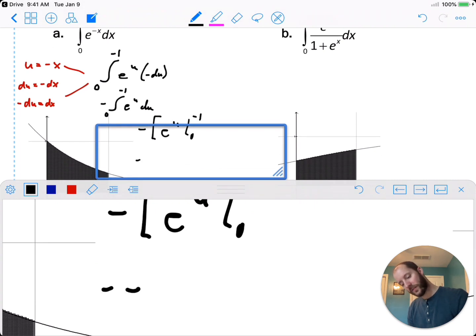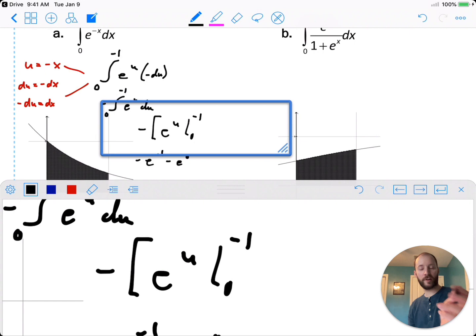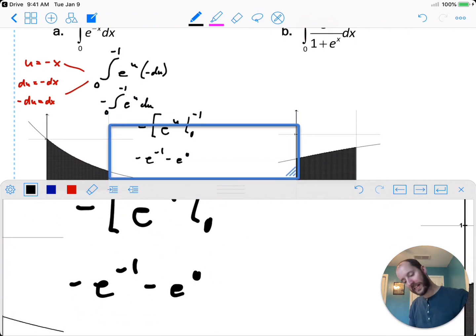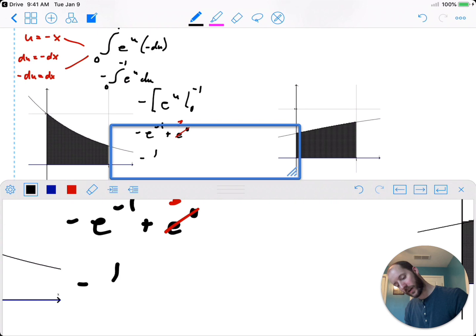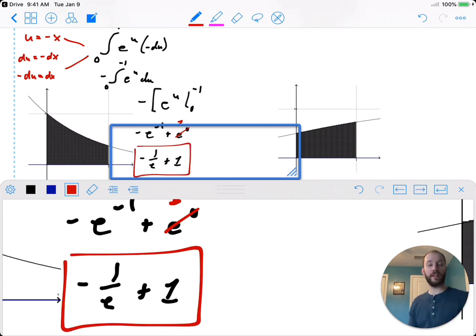So negative e to the negative 1. Well, sorry. Minus e to the 0. But you got to distribute the negative here in front of the bracket to each term. So minus negative plus the positive. Of course, e to the 0 is 1. So we end up with negative 1 over e. Plus 1. Whatever decimal that is.